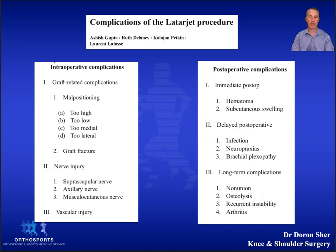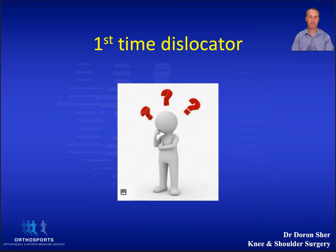This means the shoulder replacement will be bigger and more complicated than if they had only had a soft tissue procedure. So what do we tell the person who has had one dislocation? Overall we know that the younger they are, the more likely they are to re-dislocate.